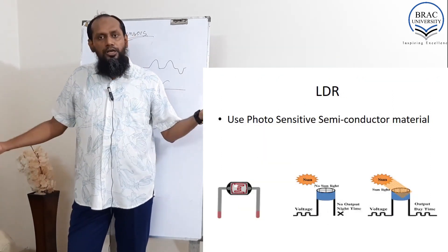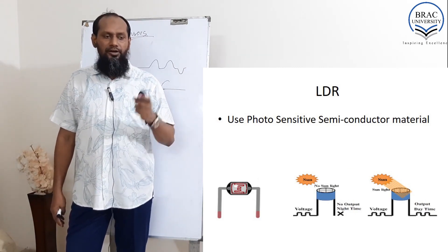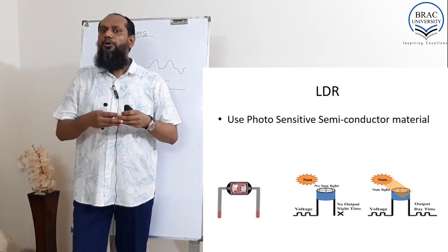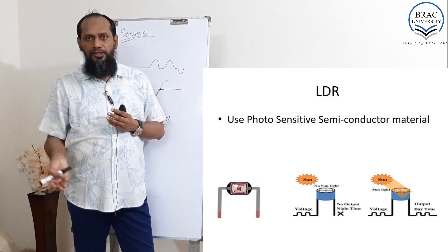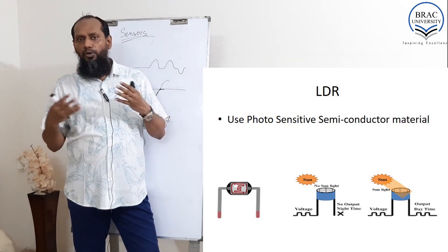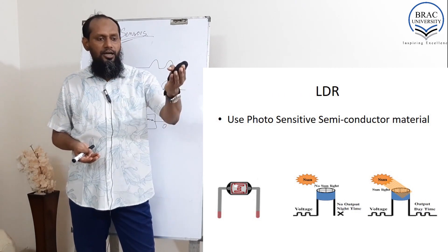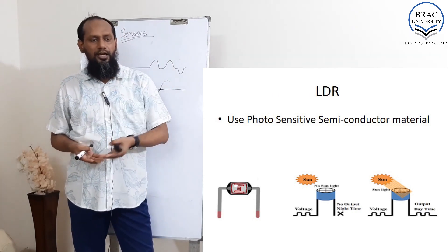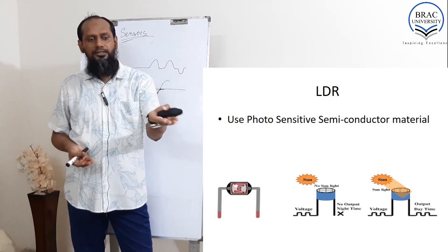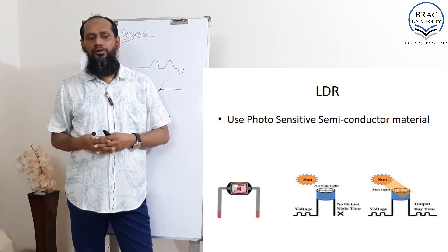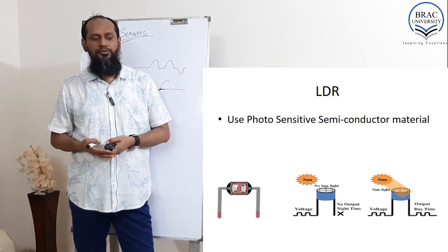Another commonly used, very cheap sensor is the LDR — light dependent resistor. It is actually a semiconductor material. When there is light, it increases conductivity; if there is no light, there is no conductivity. In the first figure with no sunlight, no voltage appears on the right side. In the second figure with light, full voltage appears on the right side — conductivity increased. In the first figure, resistance was very high.